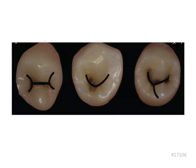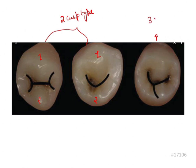Here you can see these two are two-cusp types — you can appreciate only two cusps: one is the buccal cusp and the other is the lingual cusp. Now this one is the three-cusp type. Here you can see one buccal cusp, then the mesolingual as the second cusp, and then the distolingual.